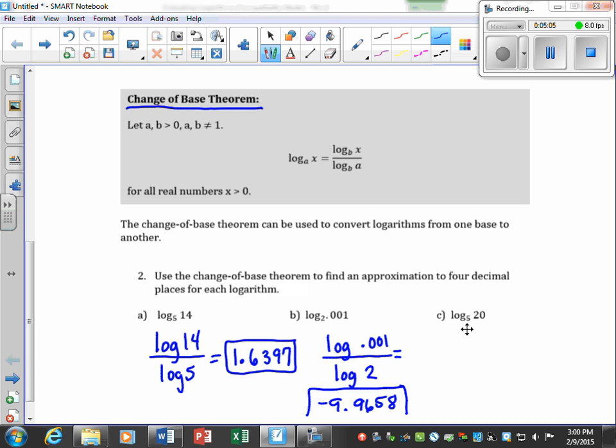Once again, in part c, this is not a known base 10, so I need to use the change of base formula. Change of base means calculate log of 20 divided by log of 5. I put that in the calculator and get 1.8614.